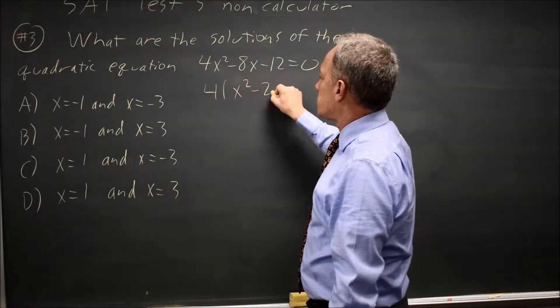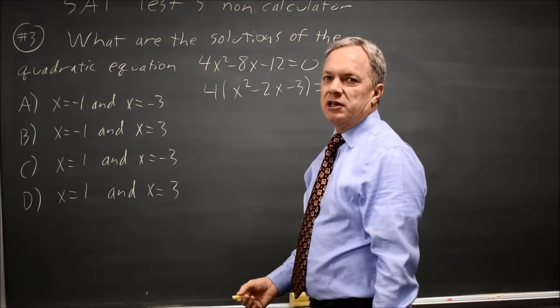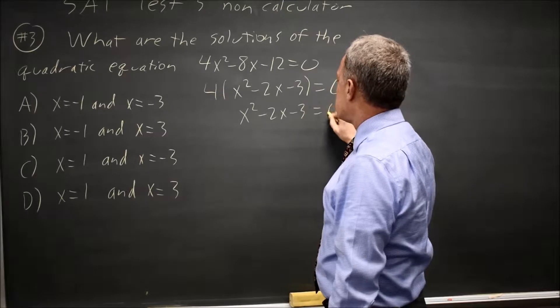So this is 4 times x squared minus 2x minus 3 equals 0. If that product equals 0, since 4 is not 0, x squared minus 2x minus 3 has to be 0.